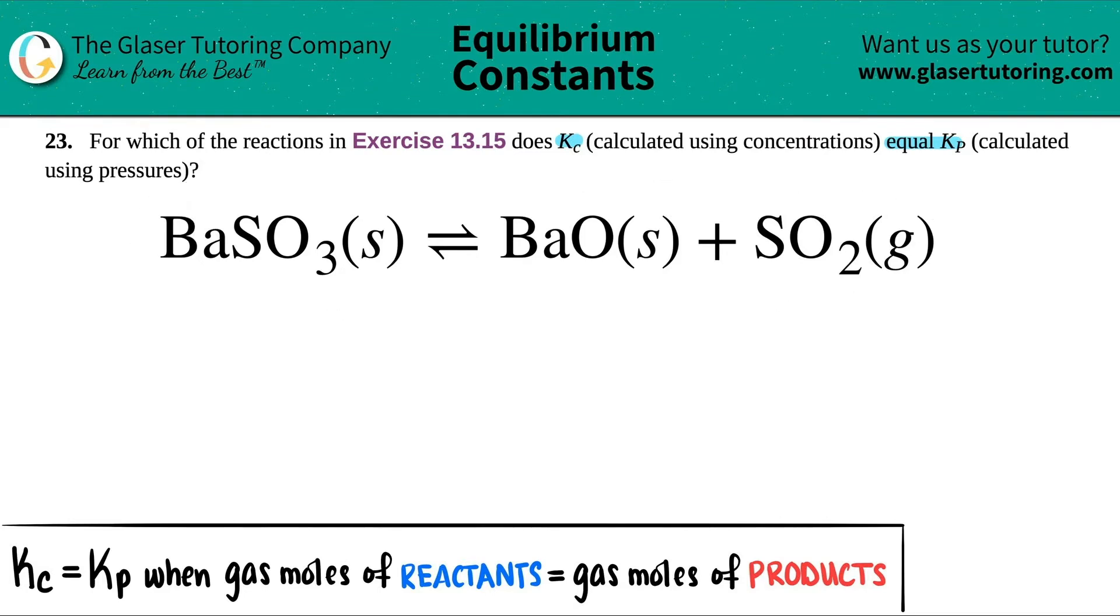So in this case, I got to figure out if BaSO3 solid, which comes to equilibrium with BaO solid plus SO2 gas, in this instance, does the Kc equal the Kp? Maybe I'll put like a question mark here. So yes or no?